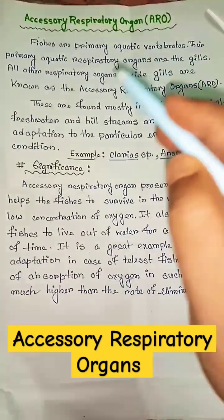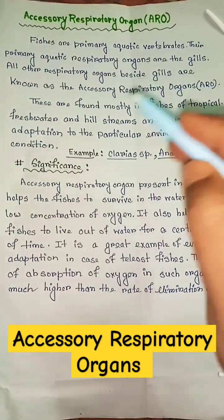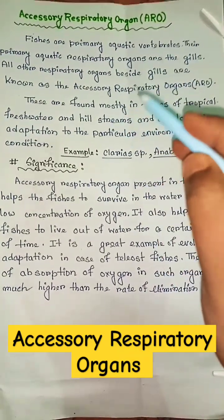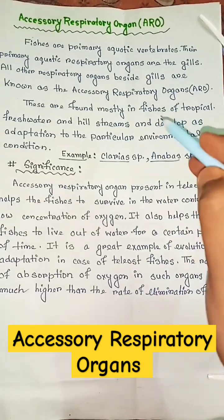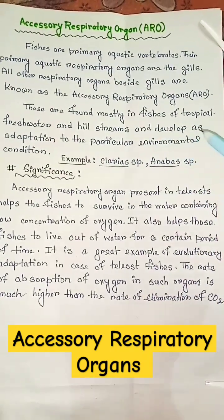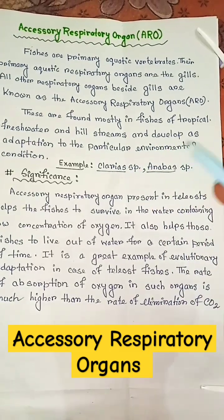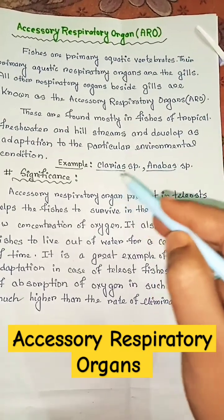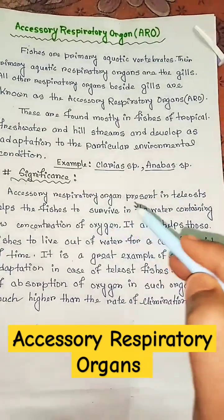Accessory respiratory organs: fishes are primary aquatic vertebrates whose primary respiratory organs are the gills. All other respiratory organs beside gills are known as accessory respiratory organs. These are found mostly in fishes of tropical freshwater and hill streams, and develop as an adaptation to particular environmental conditions. Examples include Clarias sp. and Anabas sp.